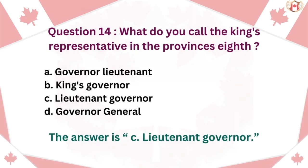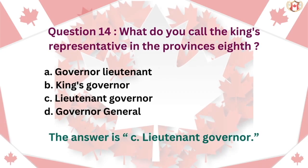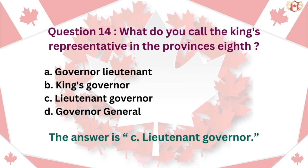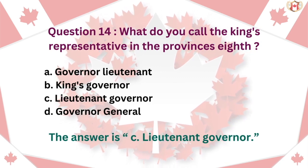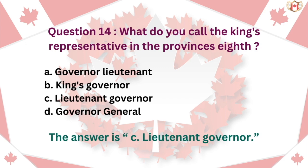Question 14: What do you call the king's representative in the province? A. Governor-Lieutenant, B. King's Governor, C. Lieutenant Governor, D. Governor General. The answer is C. Lieutenant Governor.